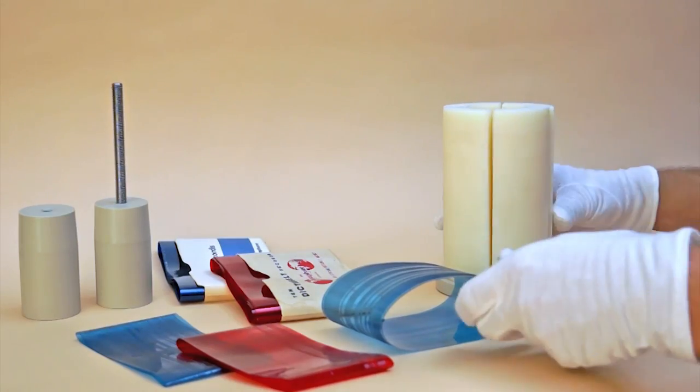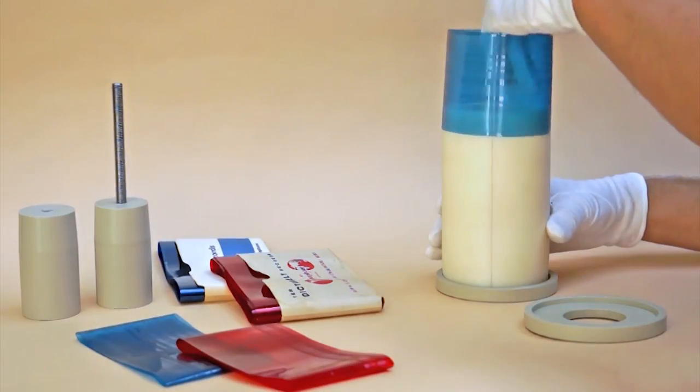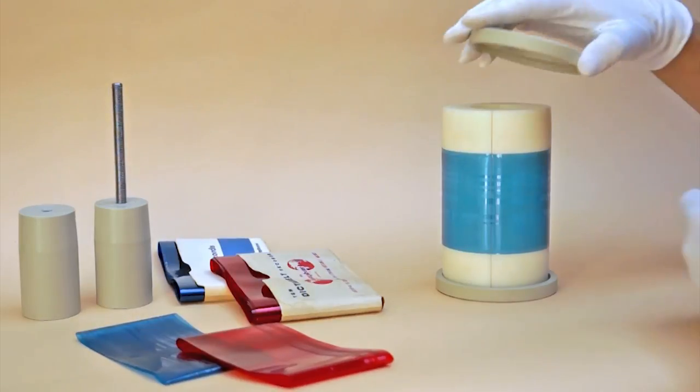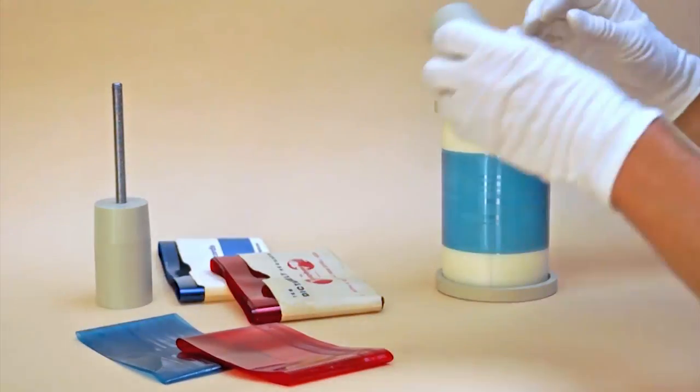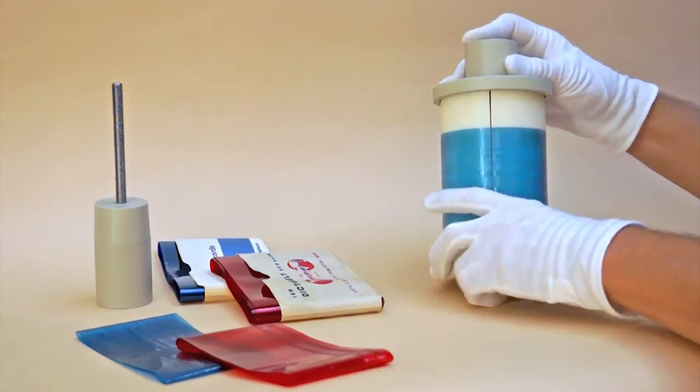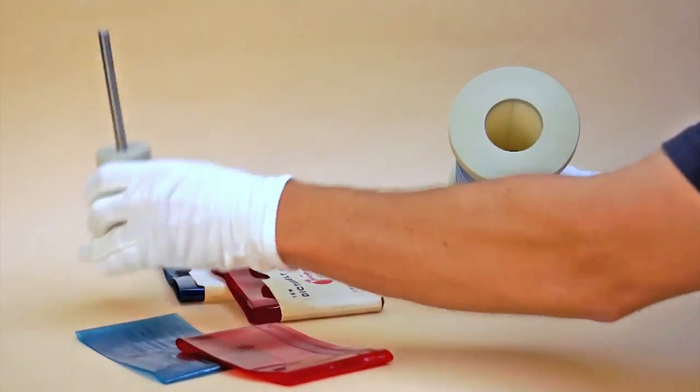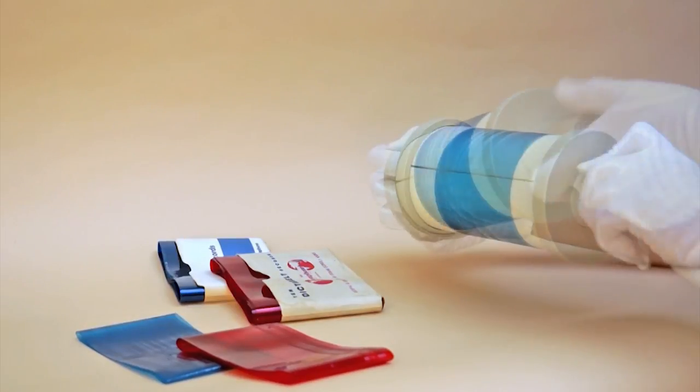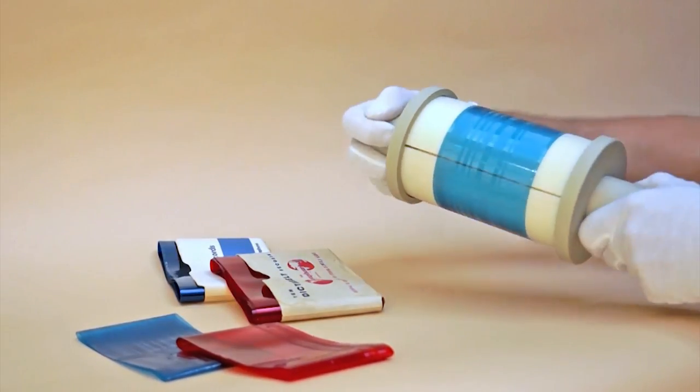Loading a Dictabelt on the mandrel is simple and easy. The machine possesses an adjustable diameter mandrel. This allows for an optimized tightness with no risk of tearing the medium.